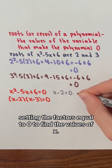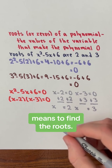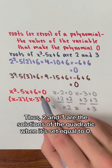Keep in mind that solving a polynomial means to find the roots. Thus, 2 and 3 are the solutions of the quadratic when it's set equal to 0.